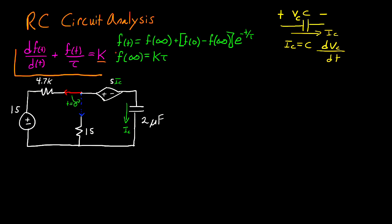Once you have this, the general solution to this differential equation is that f of t is equal to your final condition f of infinity, plus the initial condition minus f of infinity multiplied by e to the negative t divided by tau. So once you have the standard form, you already know tau and k, and their product is equal to f of infinity. The only piece of information you don't know is your initial condition — the value at time equal to zero for that function.